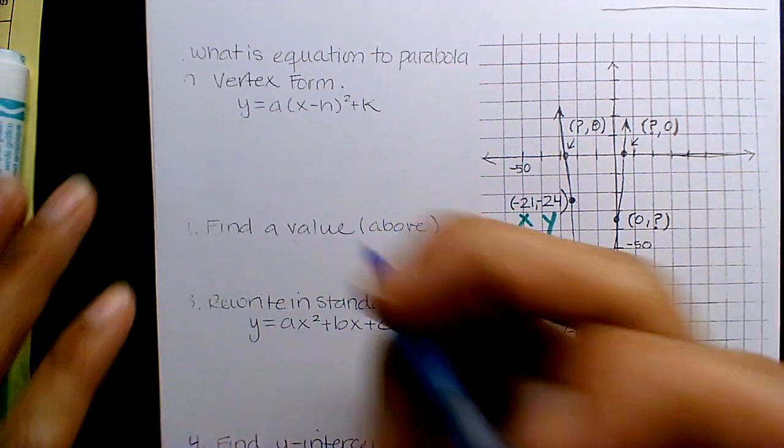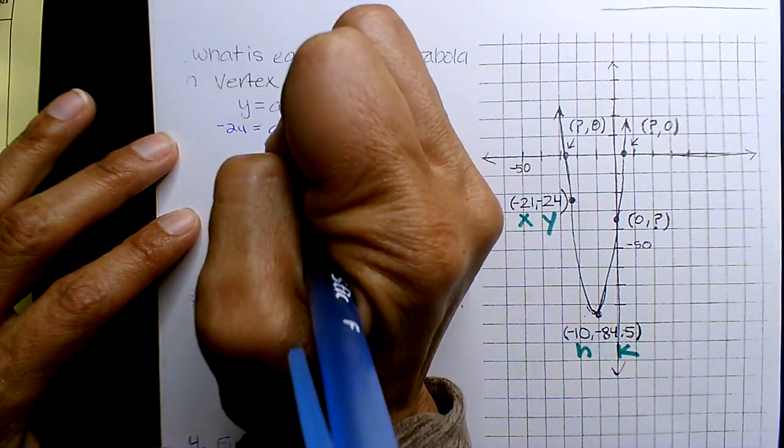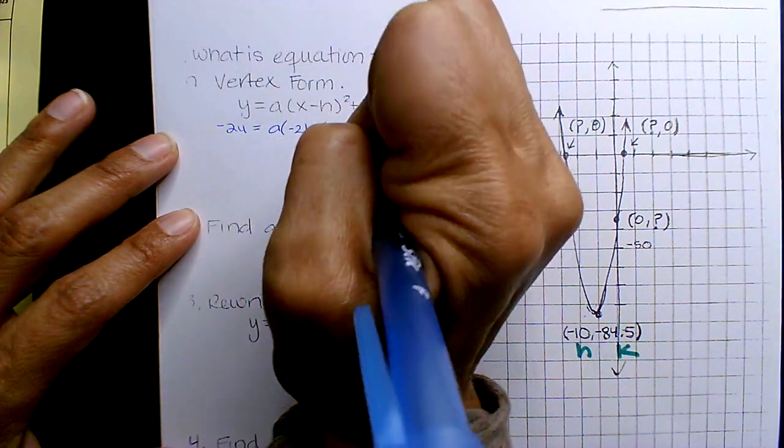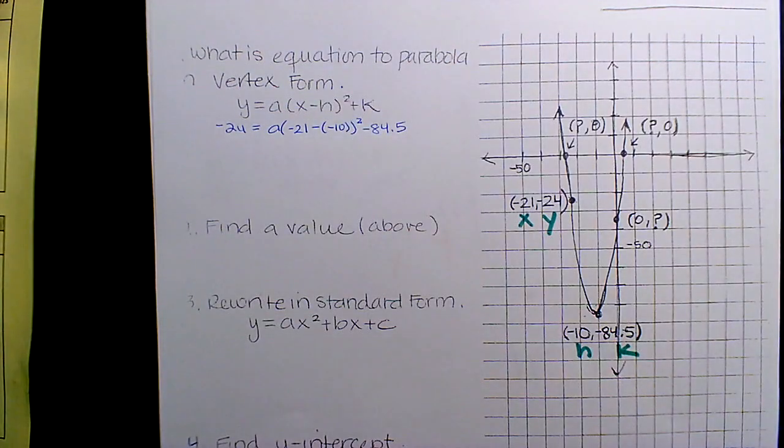So I get negative 24. Oh, let me make sure I don't mess up. Negative 21 minus negative 10 squared minus 84.5. Yeah?